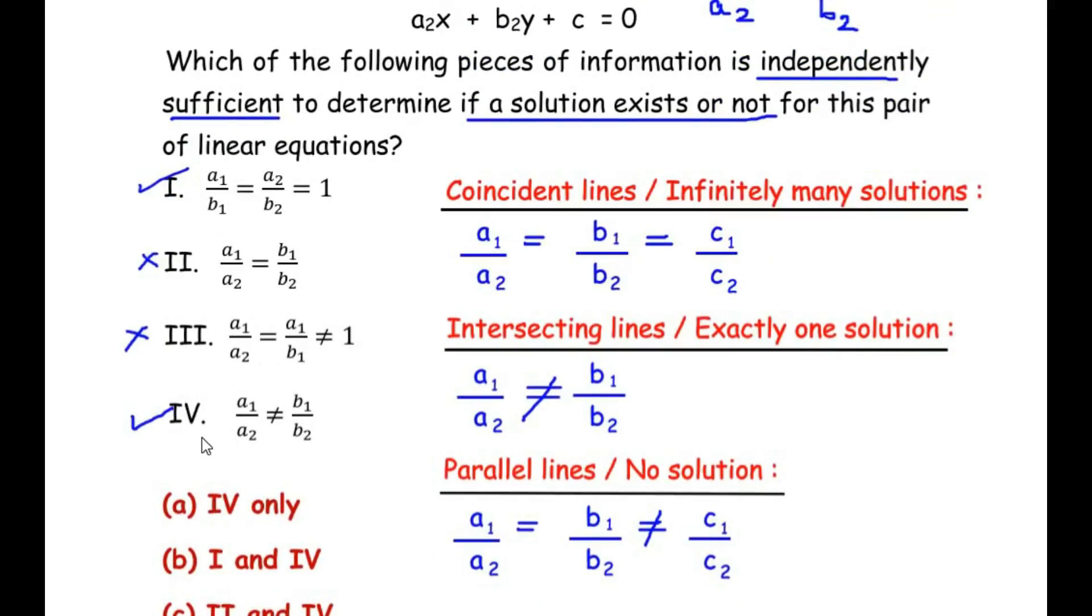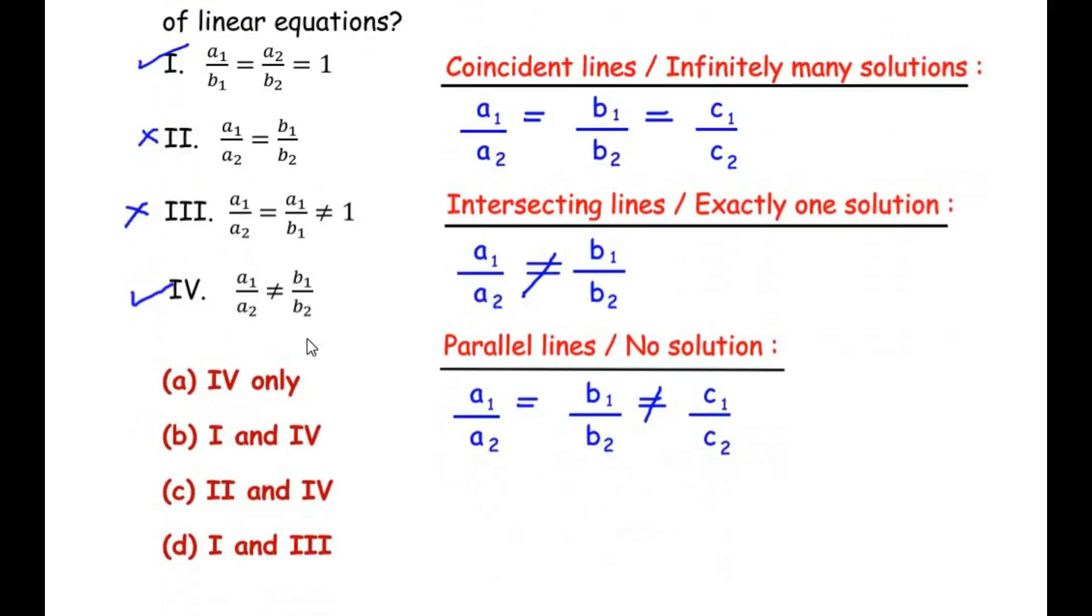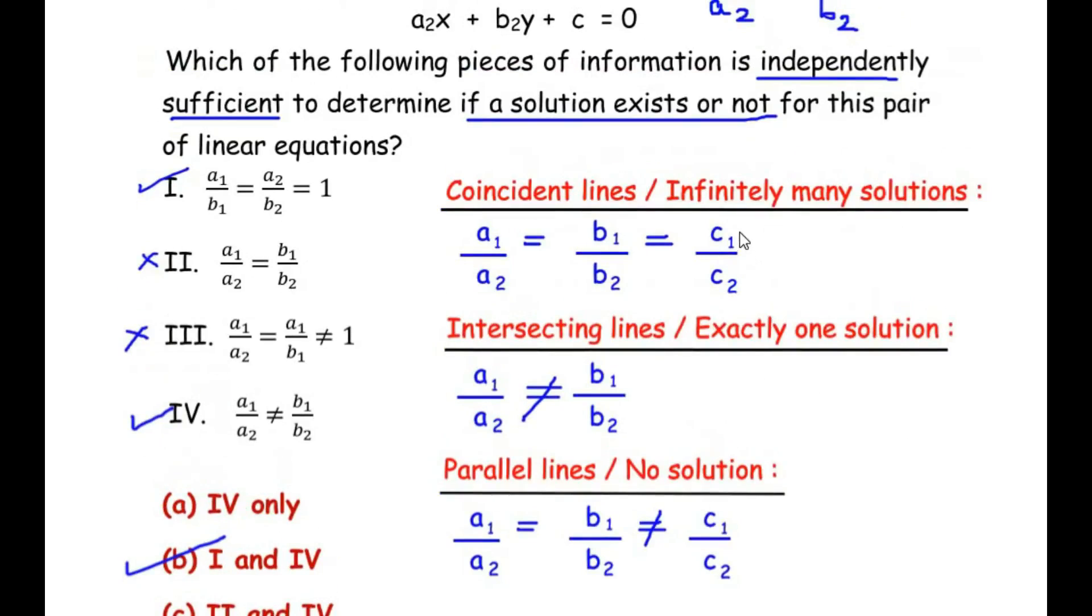So we can say that we can also consider option 4 as an independent sufficient information to find out if a solution exists or not. So here in the options, we can say option 1 and 4, which is B. In this question, you have to only know the conditions of the lines you have studied: coincident lines, intersecting lines, and parallel lines.